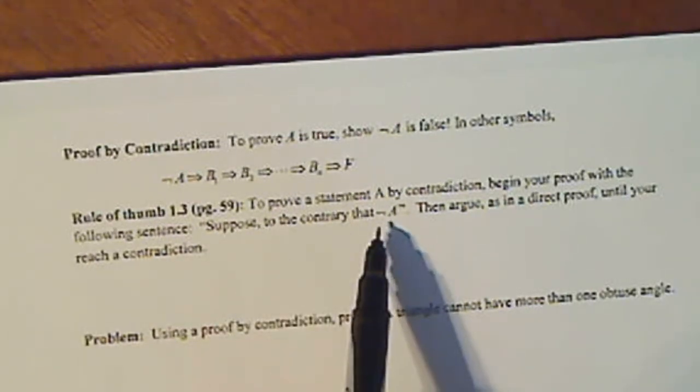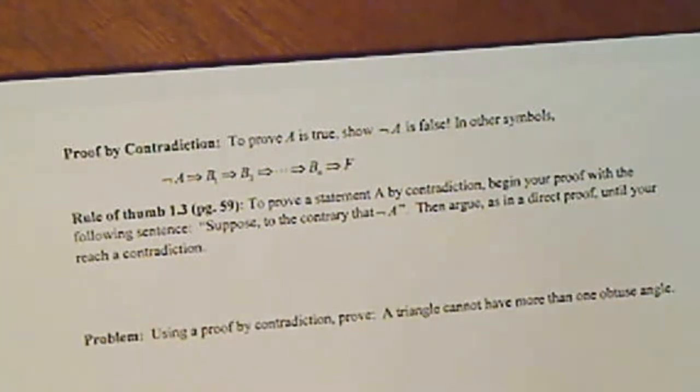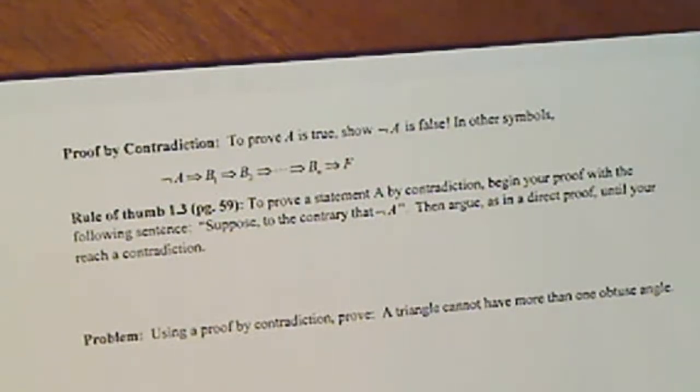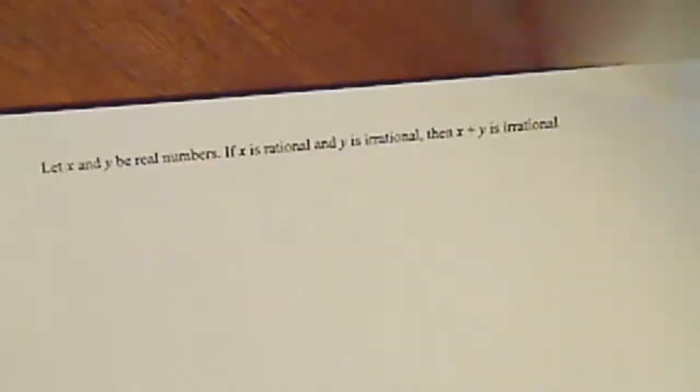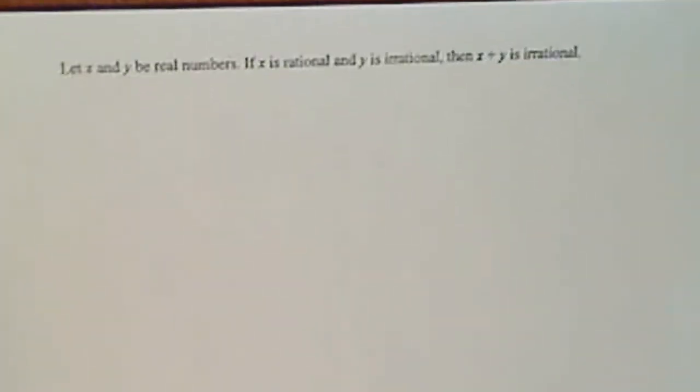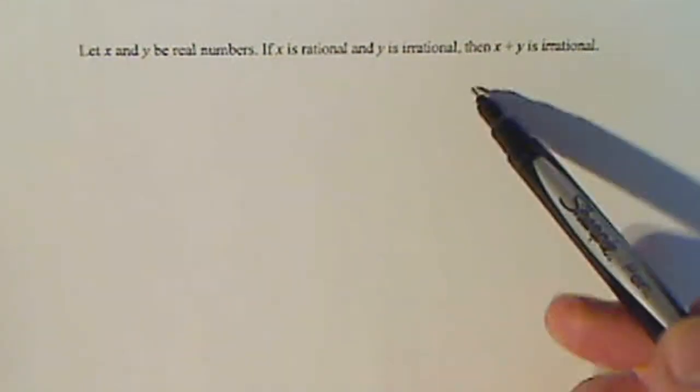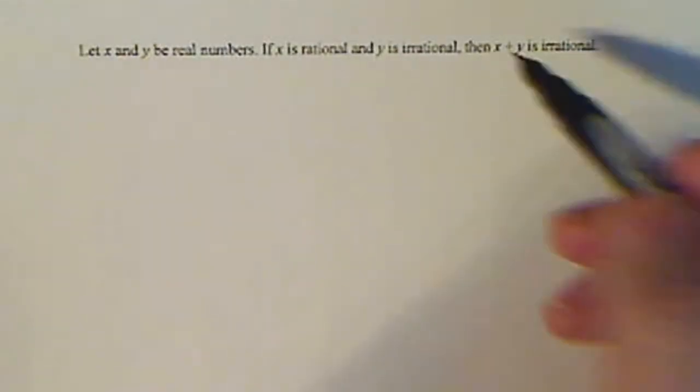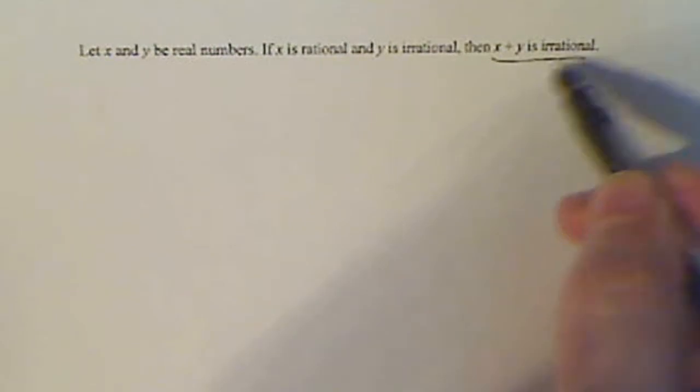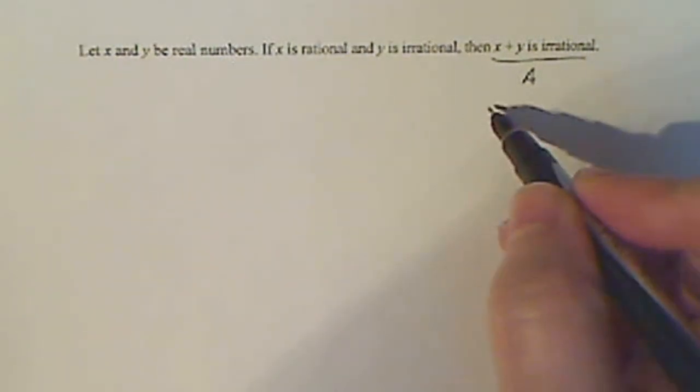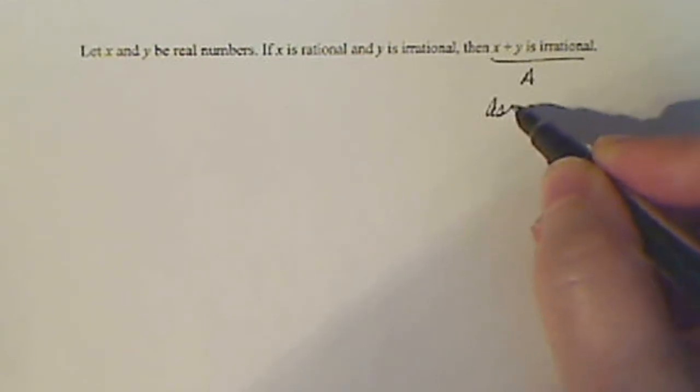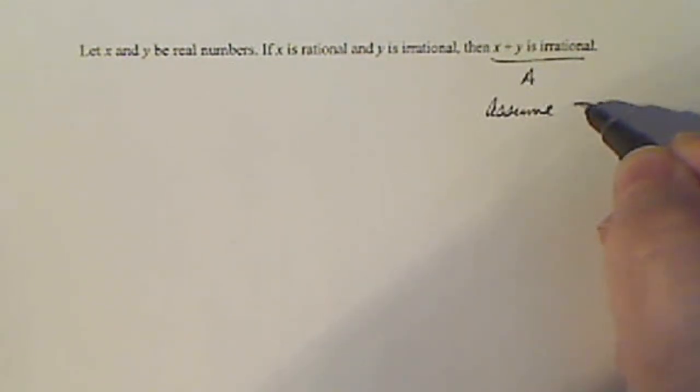So suppose the contrary that not A and argue as in a direct proof until you reach a contradiction. So let's go back to our problem. Proof by contradiction works a lot of the times when you're dealing with rational and irrational because there's really no good way to describe something that's irrational. So on our statement this is going to be our A statement and if we're going to prove by contradiction we have to assume not A.